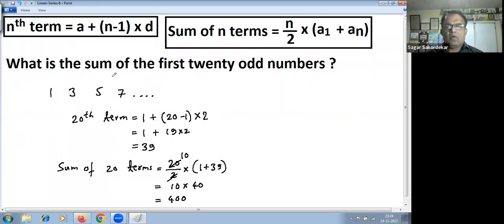So sum of first 20 odd numbers is 400. By this, you can calculate sum of n terms of any linear series. Thank you.